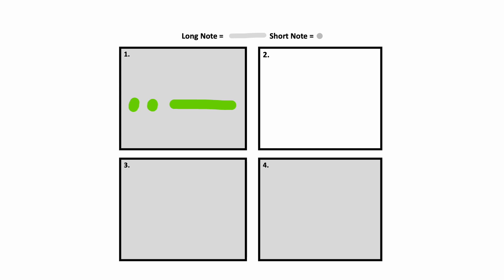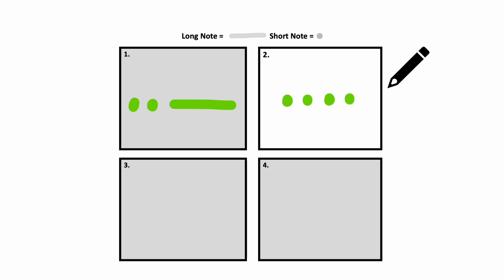Here is box number two. Here is box number two again. Did you draw four dots? You were right — that was short, short, short, short.